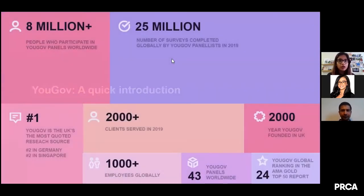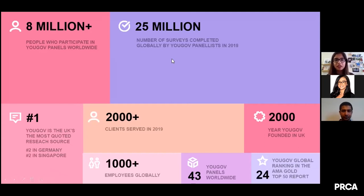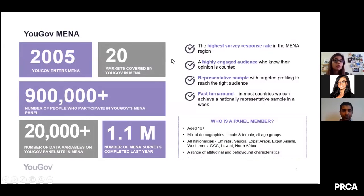Who is YouGov? We are a market research firm established in the year 2000 in the UK, where we became well known for running political surveys — including predicting elections. We did this for the US elections and were really close to the actual result. At the moment, we have more than 8 million panelists worldwide. We have a global reach and can reach most markets within MENA as well as outside. In MENA, we've been around since 2005 — more than 15 years — with over 900,000 panelists across 20 markets.